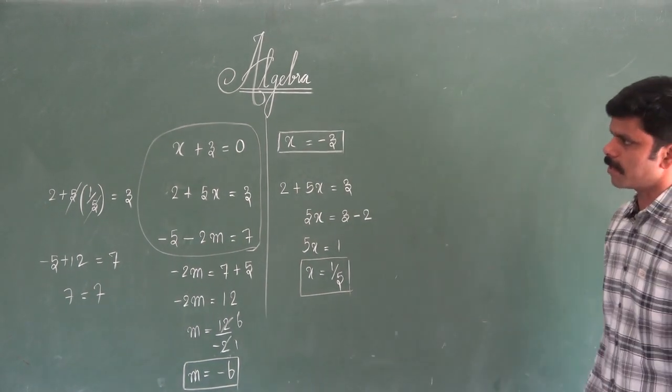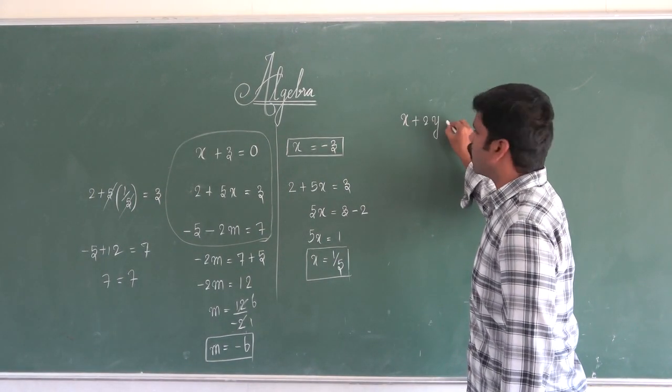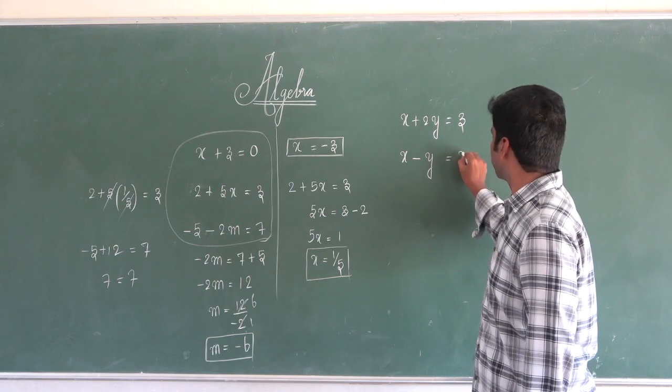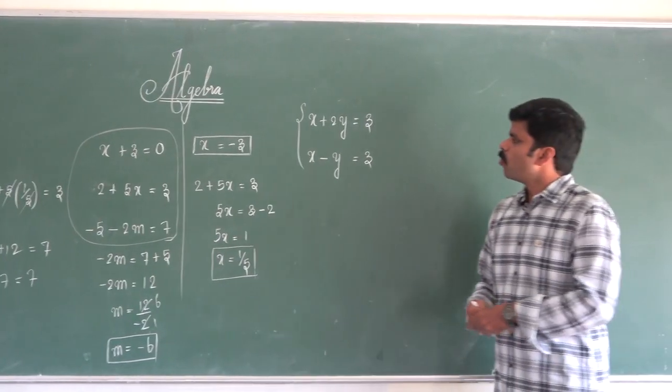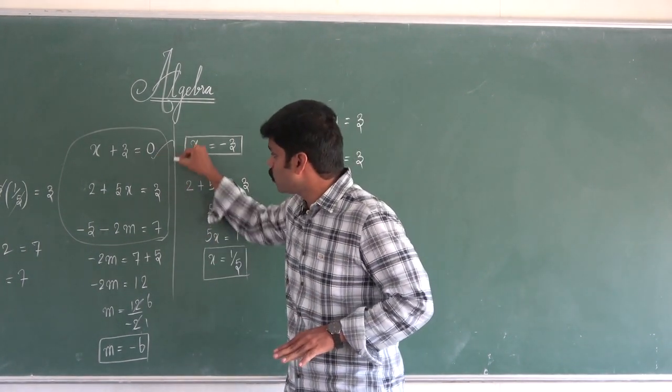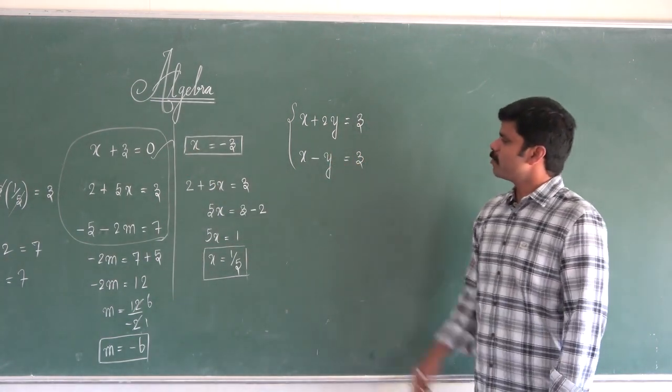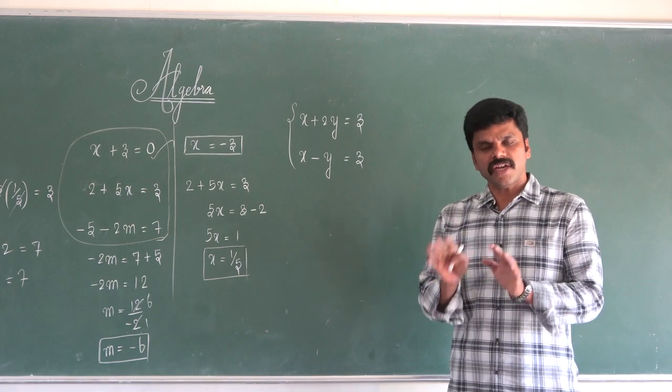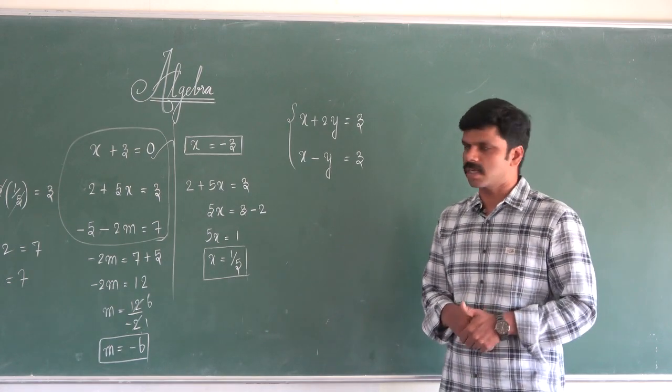I will take two equations: x plus 2y equal to 3, and x minus y equal to 3. This is a beautiful thing you must understand, dear students. If you have one unknown, you need one equation. If you have two unknowns, you need two equations. For three unknowns, you need minimum three equations.